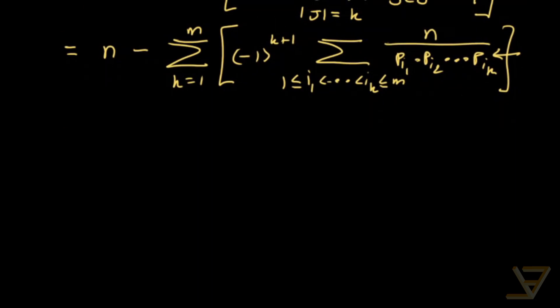And if you factor this, I'll leave this to you to figure out how. This, it's essentially the distributive law backwards. It's equal to n times 1 minus 1 over p1 times 1 minus 1 over p2 all the way through to 1 minus 1 over pm.